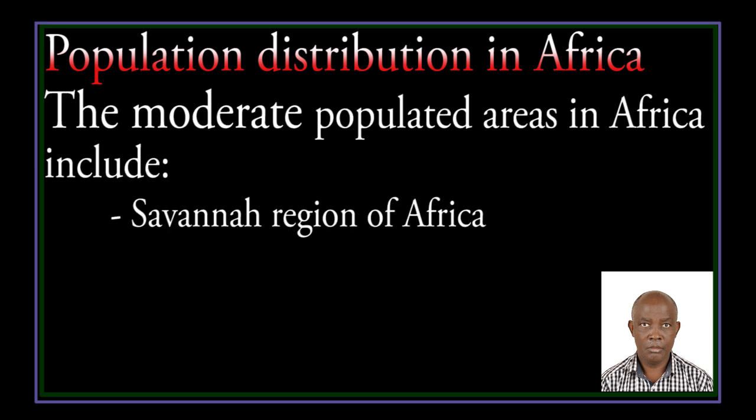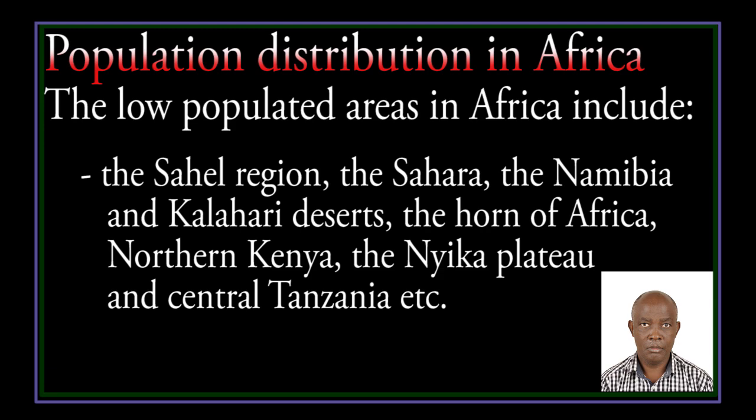The moderately populated areas in Africa include the Savanna region of Africa. The low populated areas in Africa include the Sahara region, the Namib and Kalahari Desert, the Horn of Africa, Northern Kenya, the Nika Plateau, and Central Tanzania.